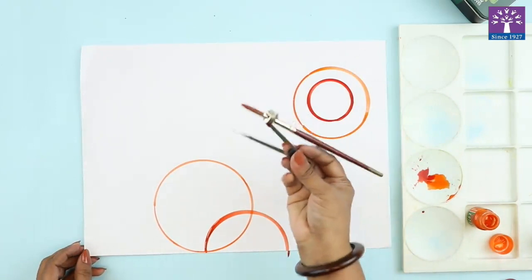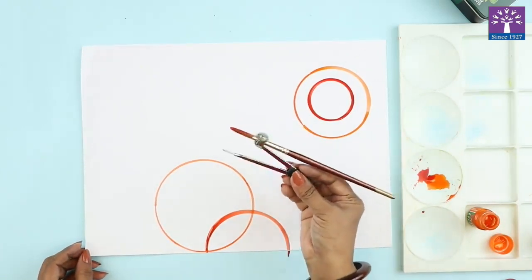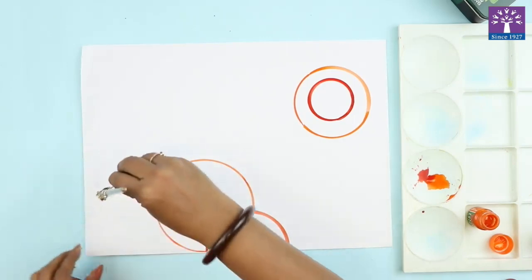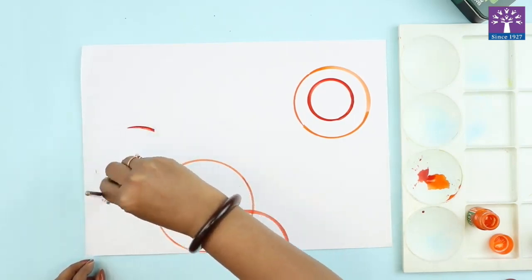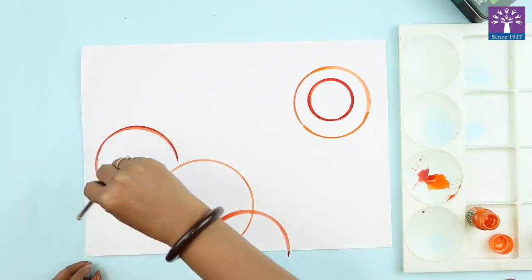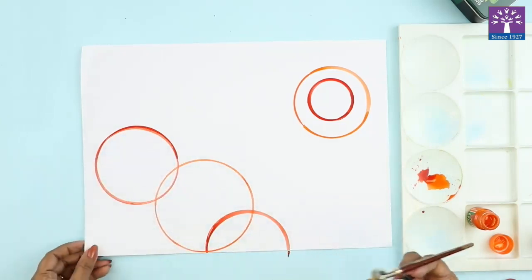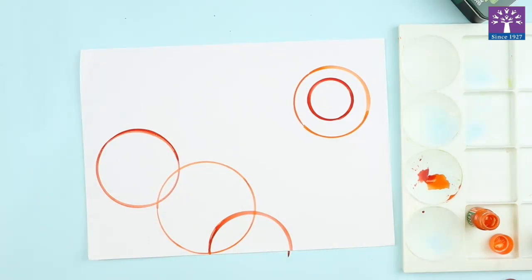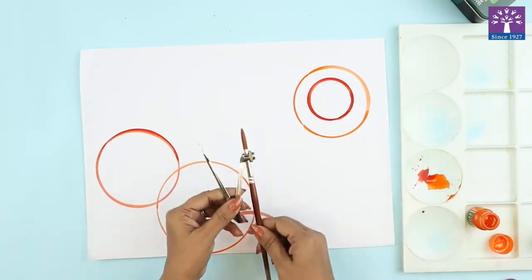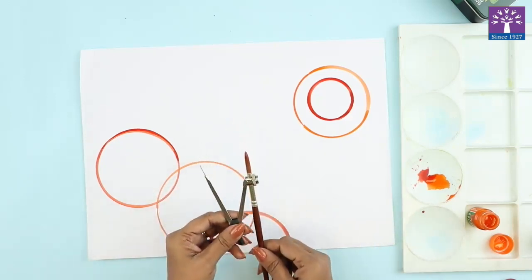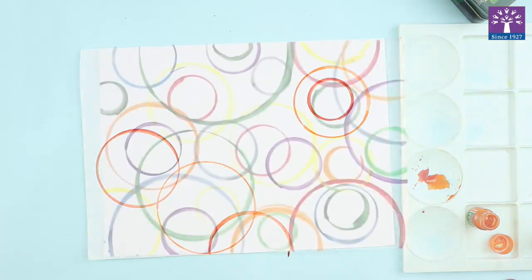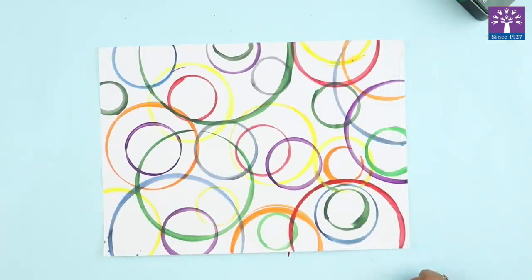Basically, by using this tool, this geometry tool, to create circles, use different colors. If you want, you can remove this brush, wash it thoroughly, and then load it again with a different color. Here we have created circles with different colors and different size circles on the drawing sheet.